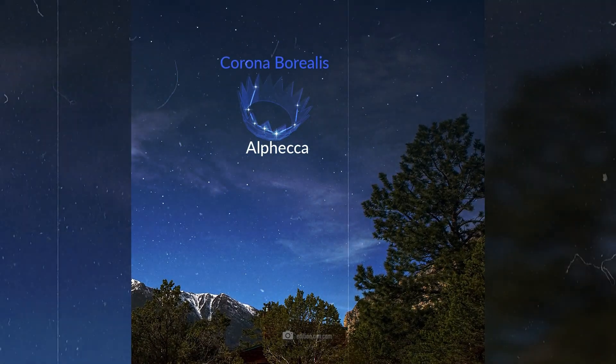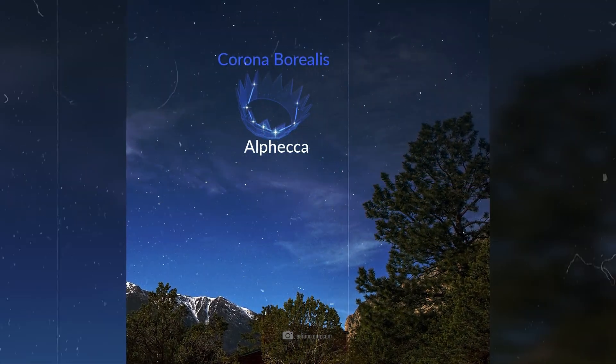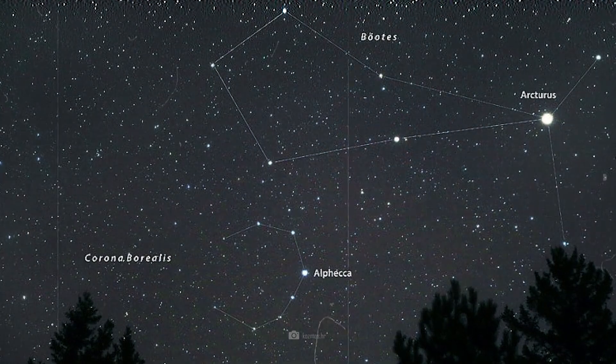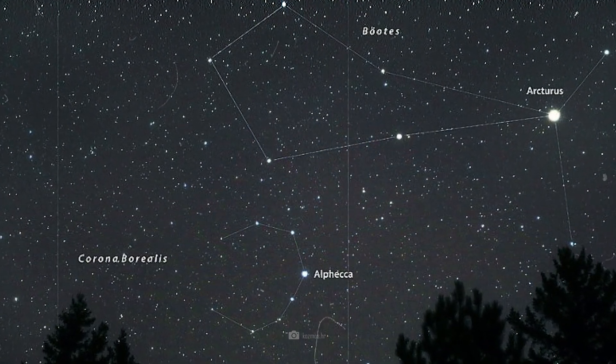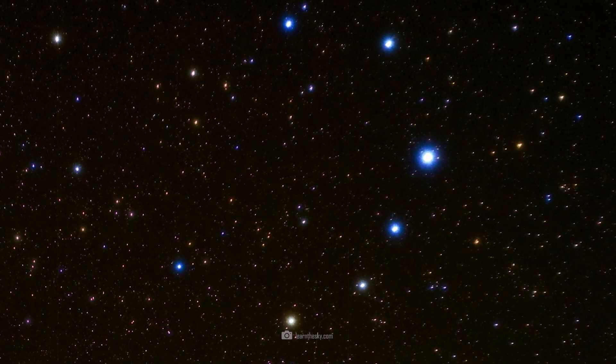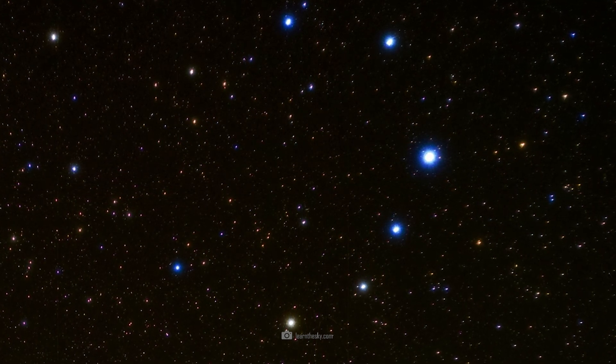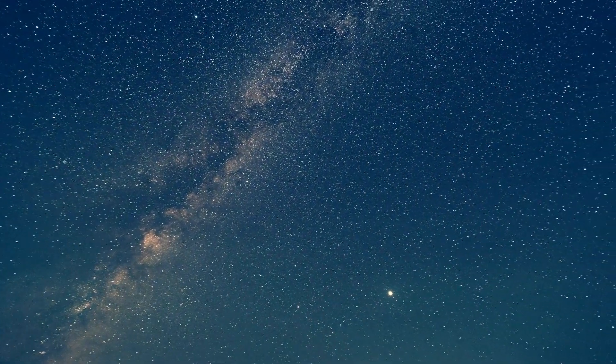Amateur astronomers among you will be familiar with the constellation Corona Borealis or the Northern Crown. Those less familiar with the night sky will find Corona Borealis between the better-known constellations of Boötes and Hercules. If you see some very bright stars there that almost form an arc, you are in the right place. The new star will appear within the arc from the date of the nova.